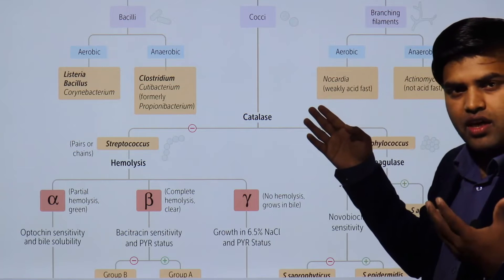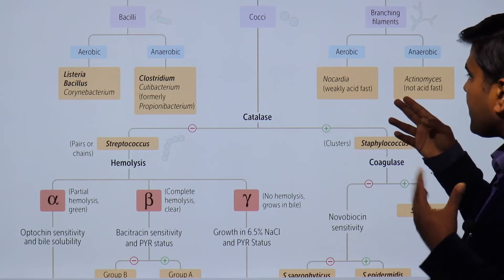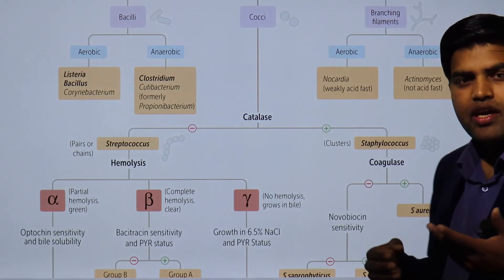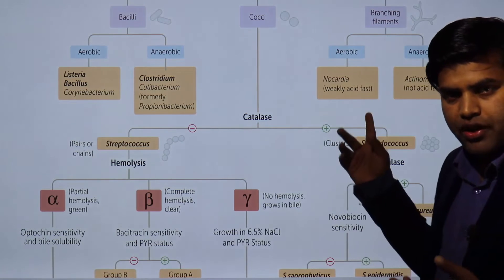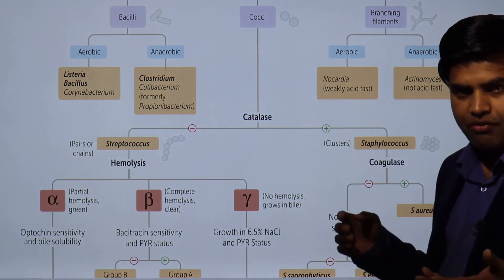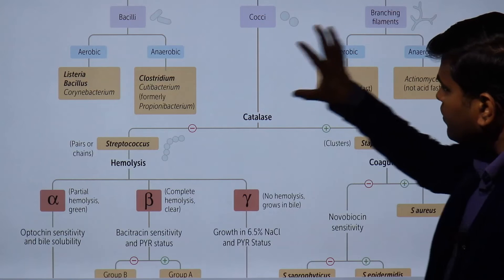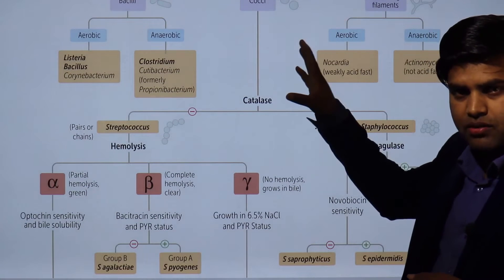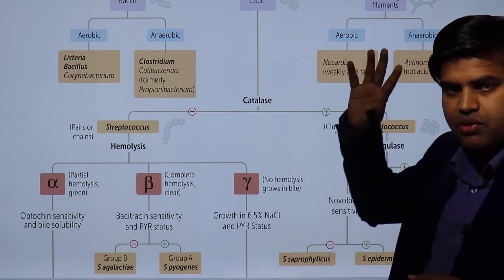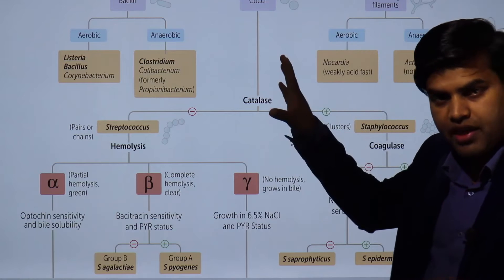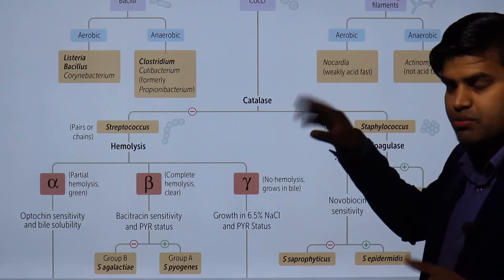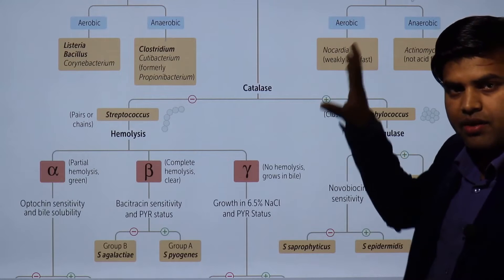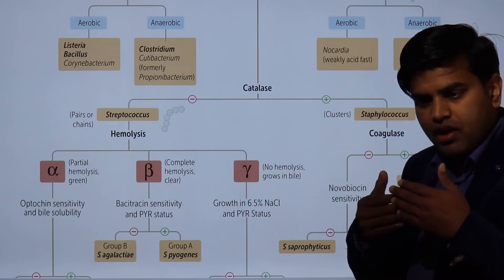There are also branching filamentous gram positive bacilli: aerobic Nocardia causing nocardiosis — an infection of the brain and lungs — and anaerobic Actinomyces. Now focusing on the cocci: gram positive cocci are mainly all cocci, with only a few exceptions, so cocci are predominantly gram positive.